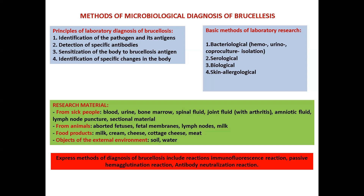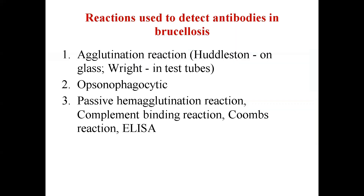Express methods of diagnosis of Brucellosis include immunofluorescence reaction, passive hemagglutination reaction, and antibody neutralization reaction. Reactions used to detect antibodies include agglutination reaction (Hedelson on glass, Wright in test tubes), opsonophagocytic reaction, passive hemagglutination reaction, complement binding reaction, Coombs reaction, and enzyme-linked immunosorbent assay.